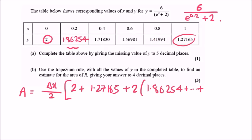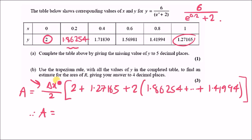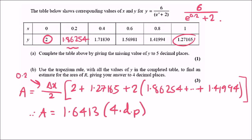The intermediate y values are multiplied by 2: including 1.8625, and all four intermediate values. With delta x equals 0.2, putting everything in the calculator gives a final estimated area of 1.6413 to four decimal places.